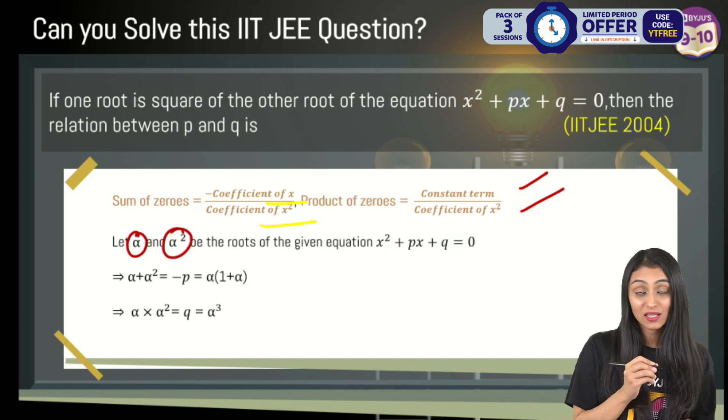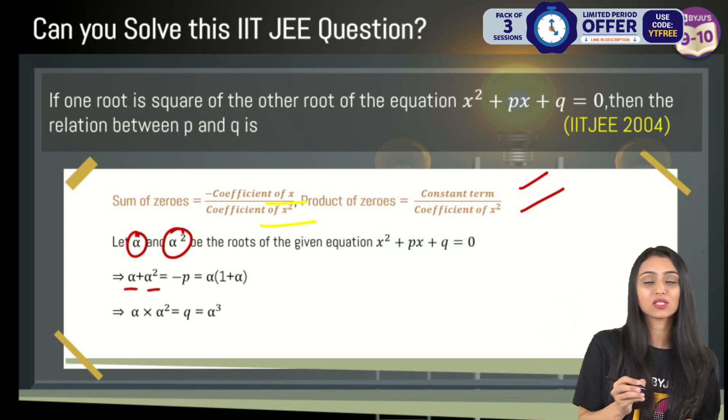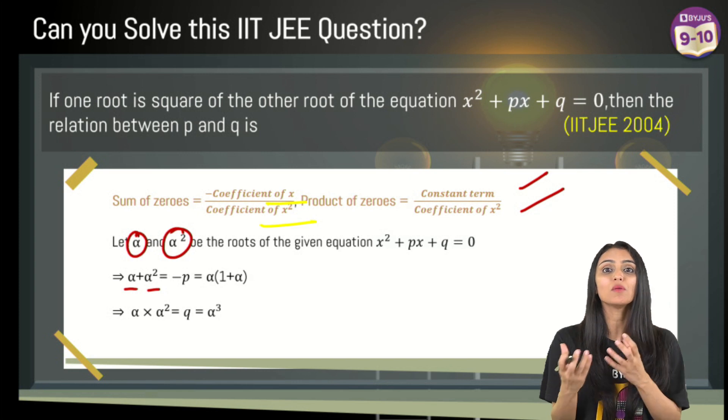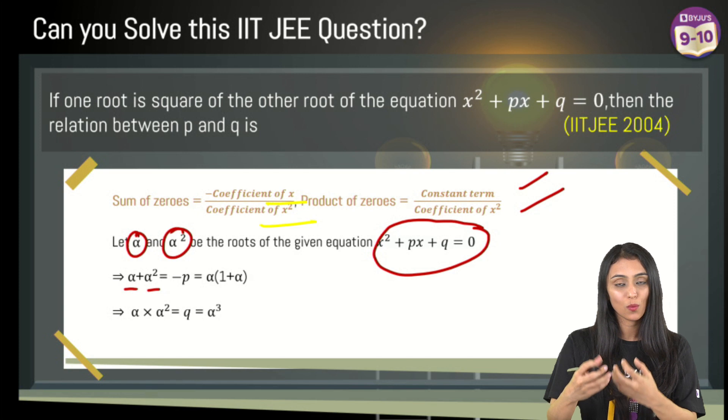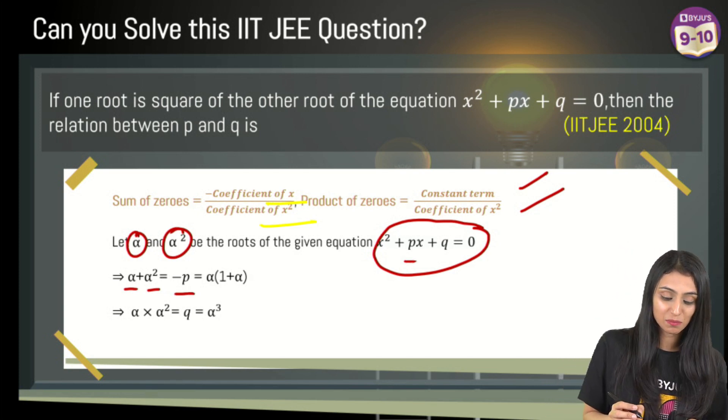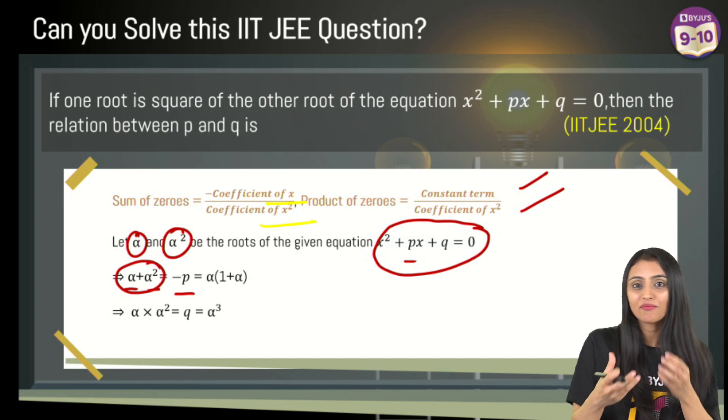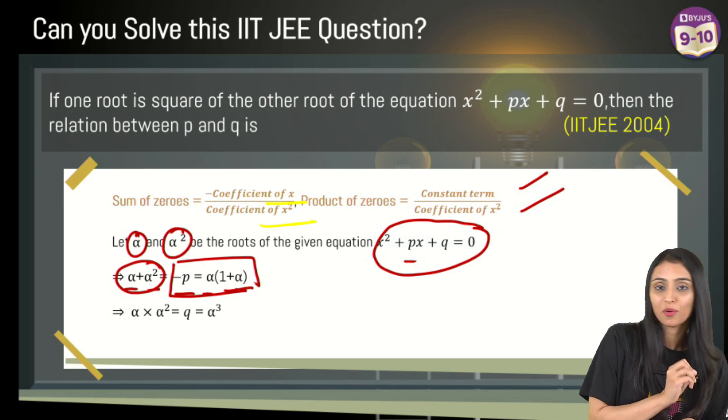Our zeros are alpha and alpha squared. So alpha plus alpha squared, the sum of zeros, equals -b/a. Comparing with the general quadratic equation, that equals -p. Simplifying, I can take alpha common: alpha times (1 + alpha) = -p.